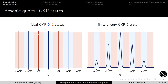These ideal GKP states are unphysical because eigenstates of quadrature are unphysical. In practice, you need finite energy GKP states where instead of eigenstates, you have squeezed states of that quadrature in a superposition. This finite energy effect basically broadens the peaks of the state, and this is the first fundamental type of error to consider in the architecture — you're never going to be able to create the ideal states.